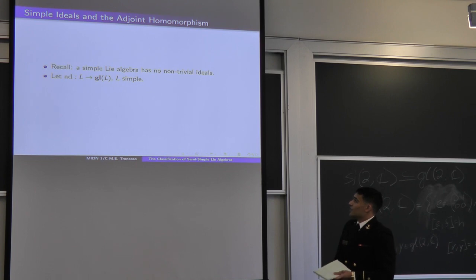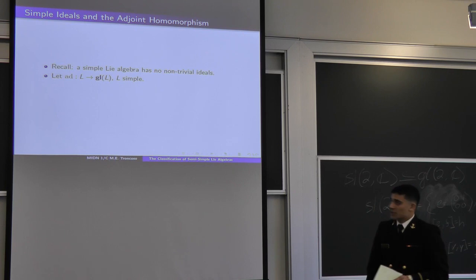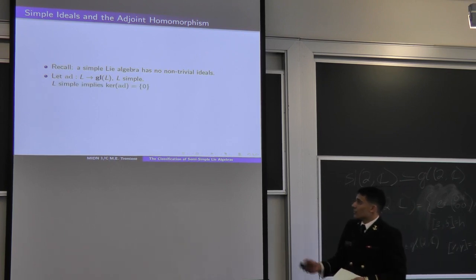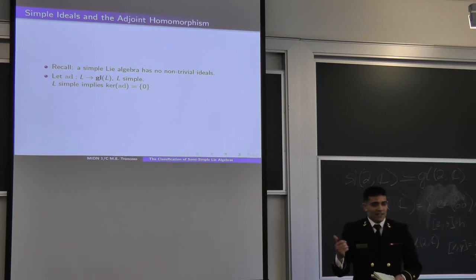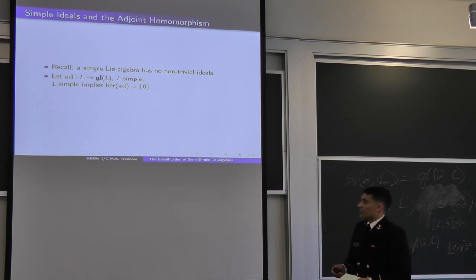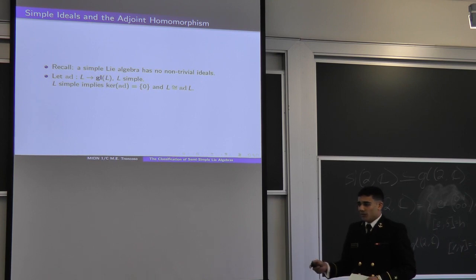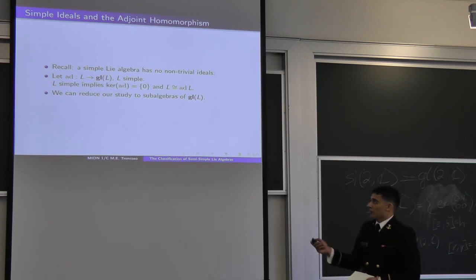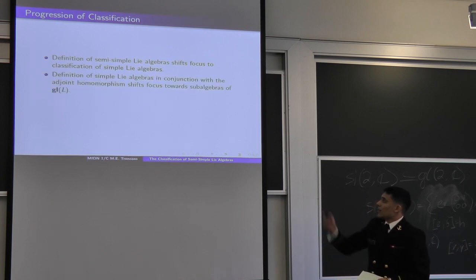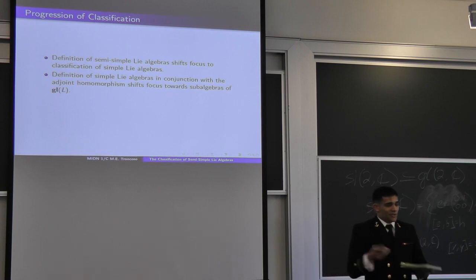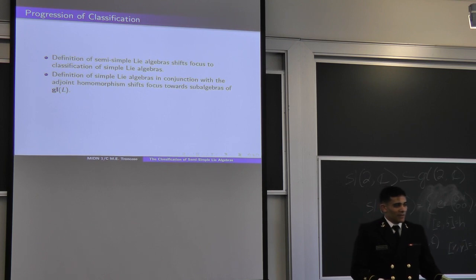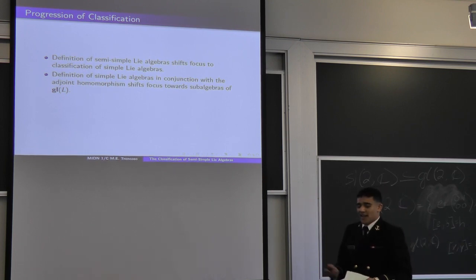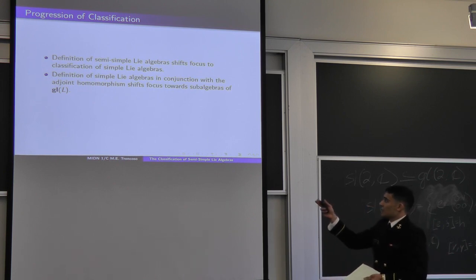Recall a simple Lie algebra has no non-trivial ideals. So we look at the adjoint homomorphism on a simple Lie algebra: taking ad from L to gl(L) for L simple, and looking at the kernel. Since it has no non-trivial ideals and the kernel is always an ideal, the kernel of ad is zero. This means L is isomorphic to its image under the adjoint homomorphism, which we call ad(L). So instead of studying simple Lie algebras directly, we can reduce our study to sub-algebras of gl(L). In summary: semi-simple Lie algebras reduce to simple ones, and simple ones reduce to sub-algebras of gl(L).